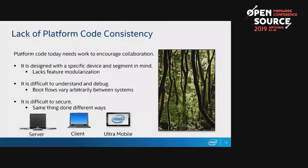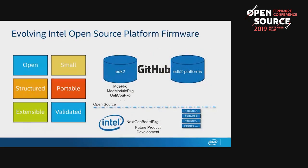This is one of the areas of improvement we're bringing — in addition to moving the code to open source — moving to a single converged minimum platform code, and then having our platforms leverage from that open source platform core. That will happen across our server, client, and ultra mobile lines, from Atom up to Xeon. In GitHub, we have the EDK2 repository and the EDK2 platforms repository. The closed source code is internal to Intel; what we have today in open source includes the EDK2 repository with packages like MDE module package and UEFI CPU. We plan to move all our platform support code to EDK2 platforms, and today we have the min platform package up there.